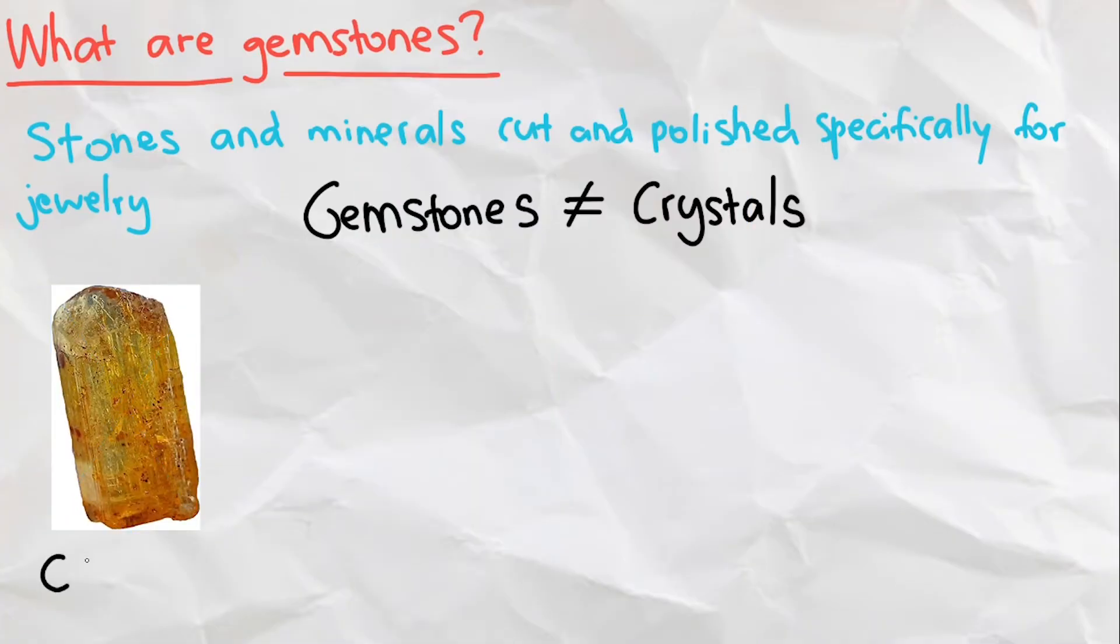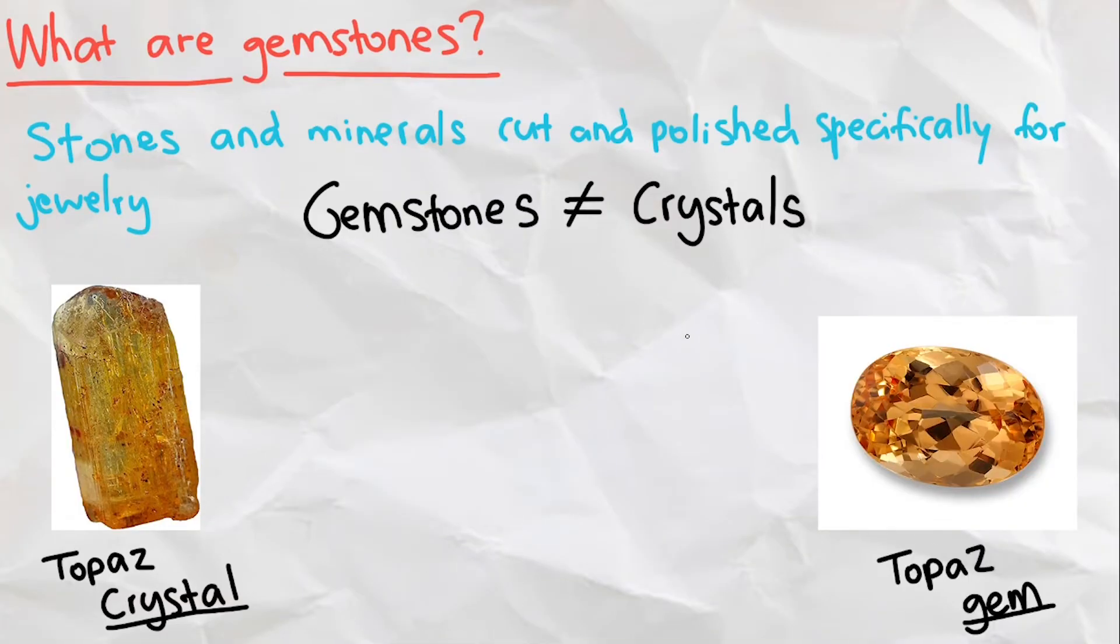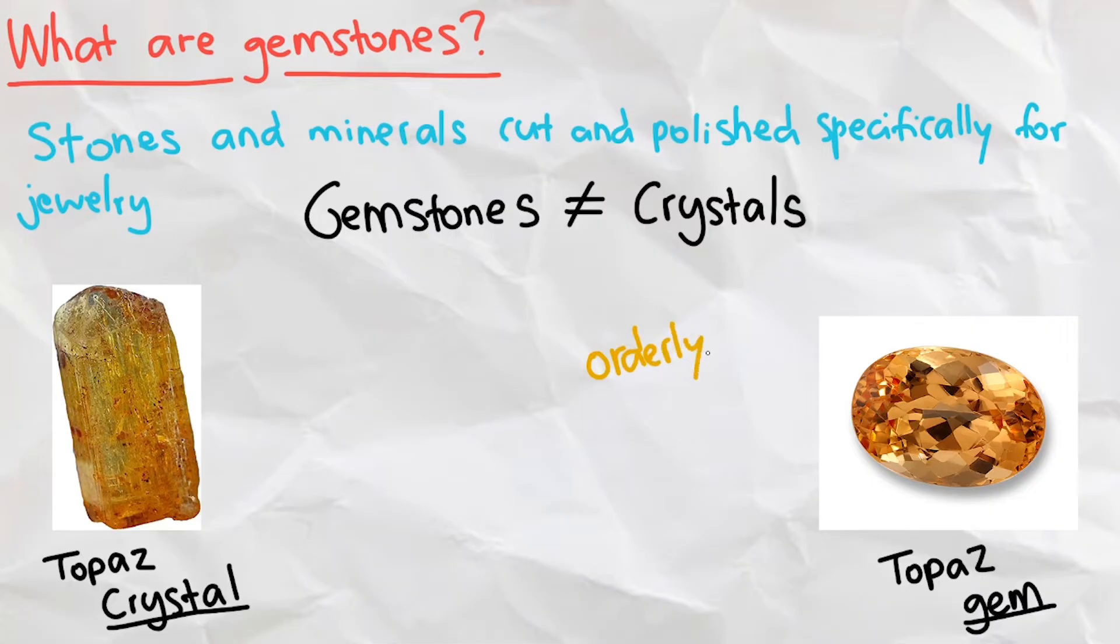Take topaz for example. This is what a topaz crystal looks like, while this is what a topaz gem looks like. Notice that even though the topaz gem is still crystal, since it has an orderly structure with flat faces, a topaz crystal isn't a gem. Us humans make a rock into gem through refining and cutting.